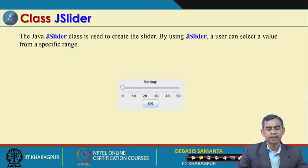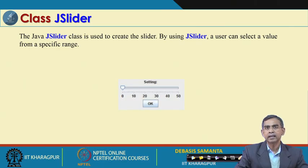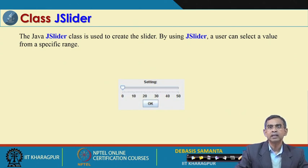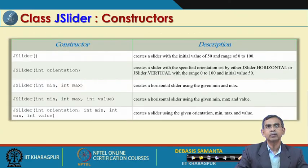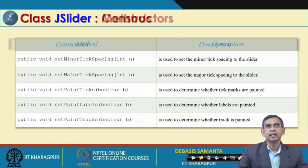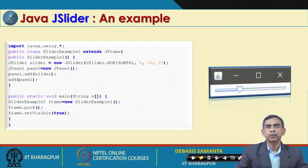JSlider is another new component not in AWT. Using the mouse, you can grab the slider and drag it to a desired position, which represents the value you want to input. When you release the slider, that value is returned to the system. It has a few constructors and methods, and a simple example program lets you run it, click, drag, and move the slider to any position.